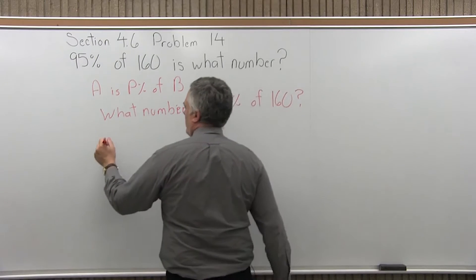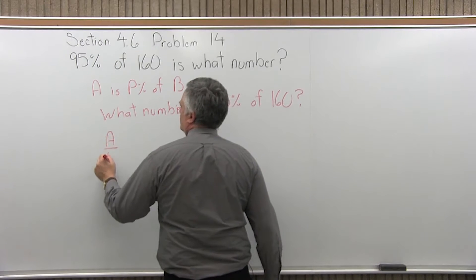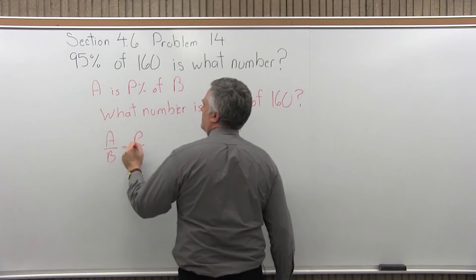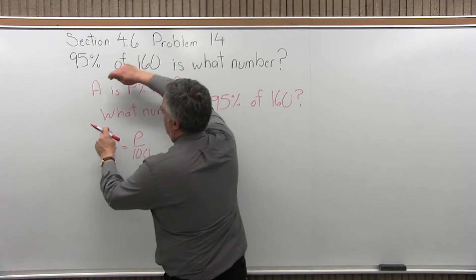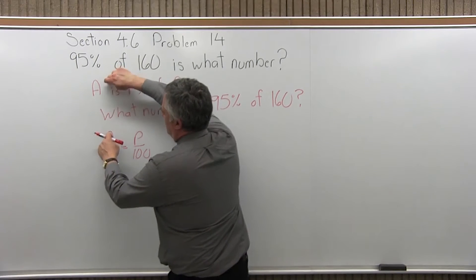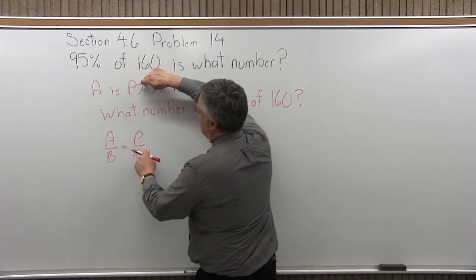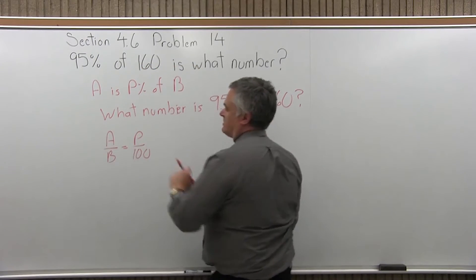Now that I have it in the right form, I'll use the equation A over B equals P over 100. And as I fill that in, I start with the A, and you just go right around and make a circle. A is P percent of B. Just goes right around like that.